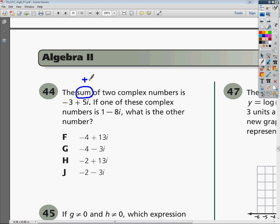It says the sum of two complex numbers is, whenever you see the word is, typically that's going to mean an equal sign. It says the sum of two complex numbers is negative 3 plus 5i, so it equals negative 3 plus 5i.